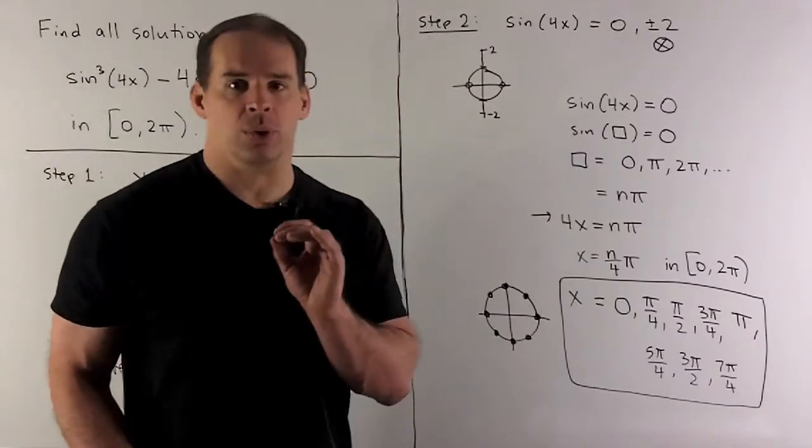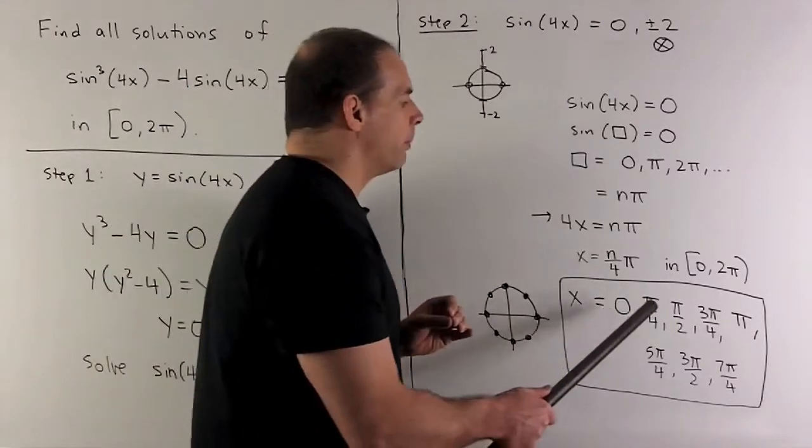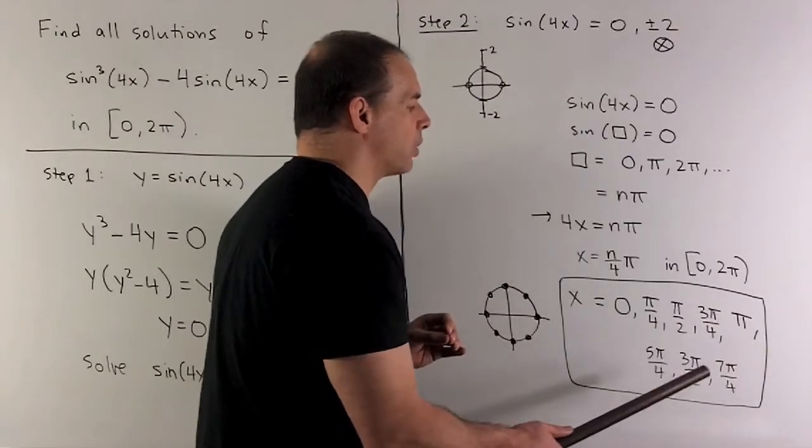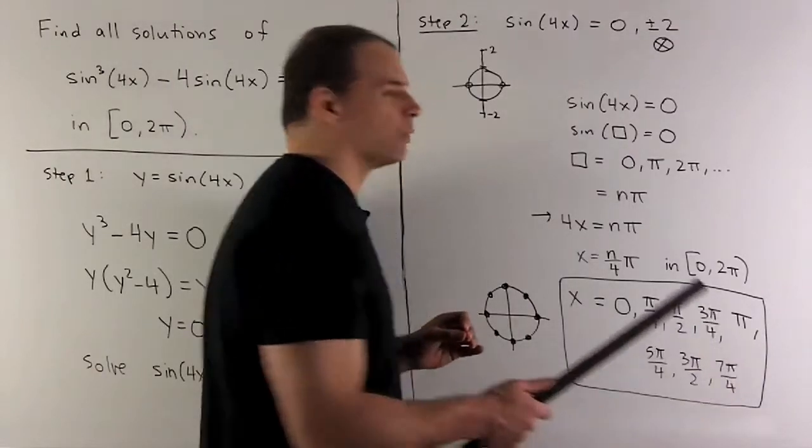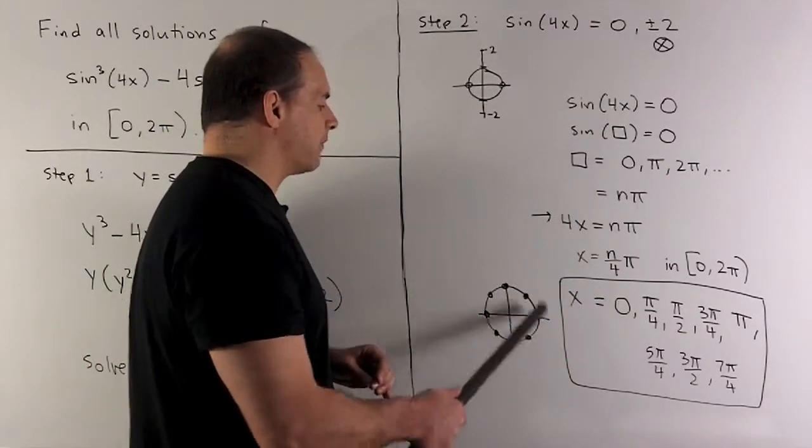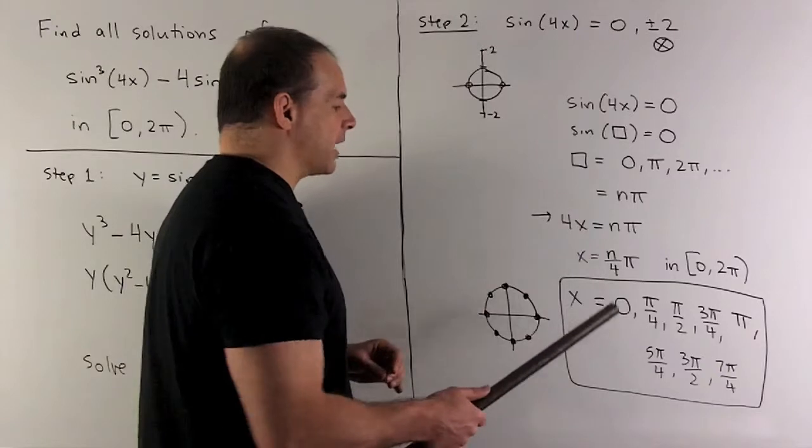So the x that we get for solutions will be 0, π/4, π/2, 3π/4, π, 5π/4, 3π/2, 7π/4. We plot them all on our unit circle. They're all spaced out by π/4. So that's our answer.